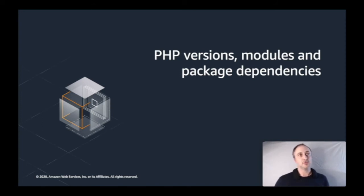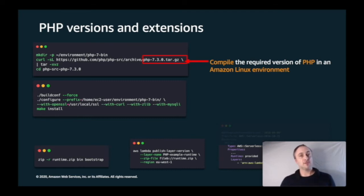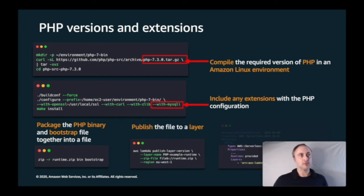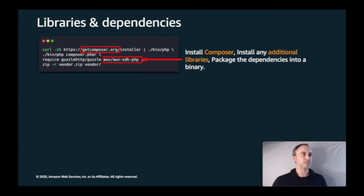Here's an example where I'm compiling the required version of PHP — PHP 7.3 — in an Amazon Linux environment, including only the extensions I want such as mysqli, then packaging up the binary and the bootstrap file together into runtime.zip. I use the CLI to publish that to a Layer and then add that Layer to my Lambda function — that's how the Lambda function knows it's a custom runtime running PHP. A similar approach adds libraries and dependencies.